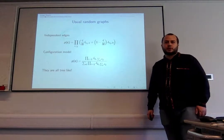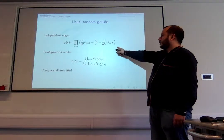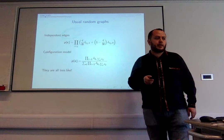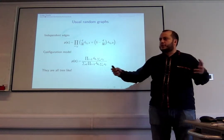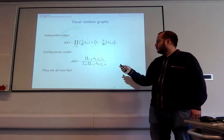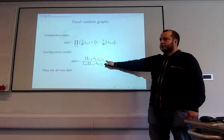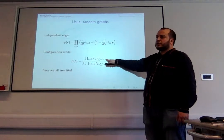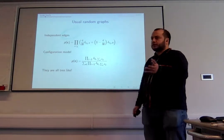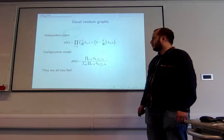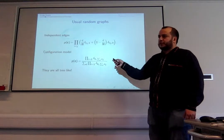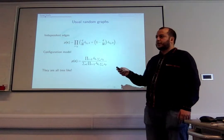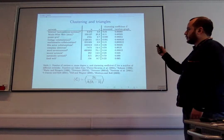Some traditional random graph models: the first is Erdős–Rényi, where you put a 1 or 0 independently for each edge, with probability c/n to enforce finite connectivity. Another famous one is the configuration model, where you restrict the sum of each row or column to a fixed value, uniform subject to that constraint. You can also add degree correlations, but in all these cases the graphs will be tree-like.